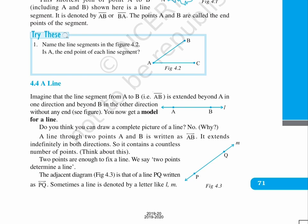Do you think you can draw a complete picture of a line? No. Why? A line through two points A and B is written as AB with an overhead extended arrow bar. It extends indefinitely in both directions, so it contains a countless number of points. Think about this.